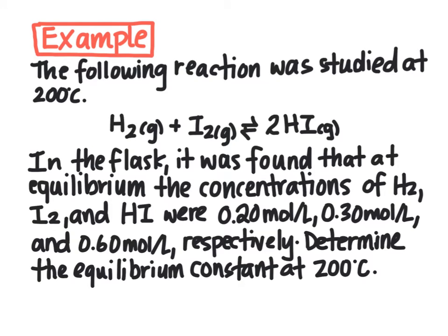We're going to walk through an example that will first allow us to calculate the equilibrium constant and then use an ICE table to figure out concentration at equilibrium. The following reaction was studied at 200 degrees Celsius — that's important because if the temperature changes, so does the equilibrium constant. We have hydrogen plus iodine gas combining to form two hydrogen iodide gas molecules. In the flask, it was found that at equilibrium, the concentrations of hydrogen, iodine, and hydrogen iodide were 0.2, 0.3, and 0.6 moles per liter respectively.